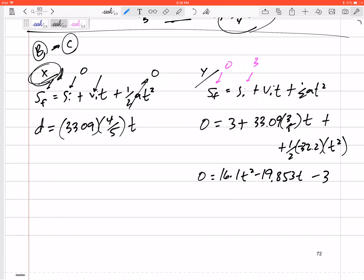Use a quadratic formula to solve for T is 1.369 seconds. Plug that back up there. I'll get a D of 36.2 feet. That was my answer.